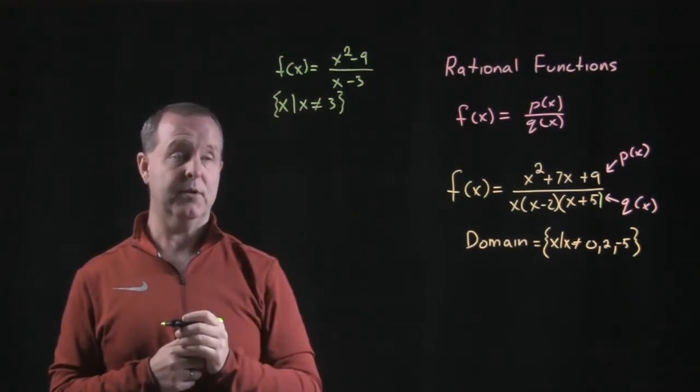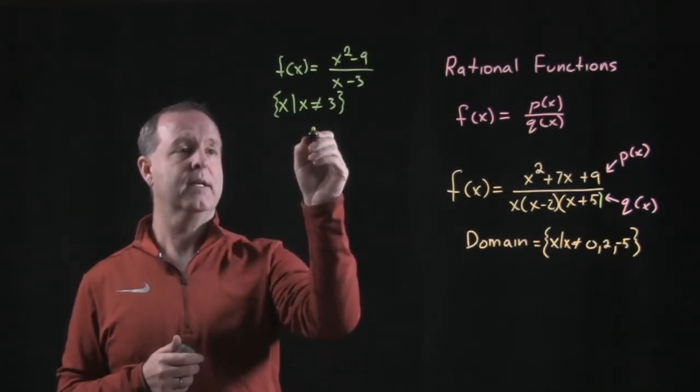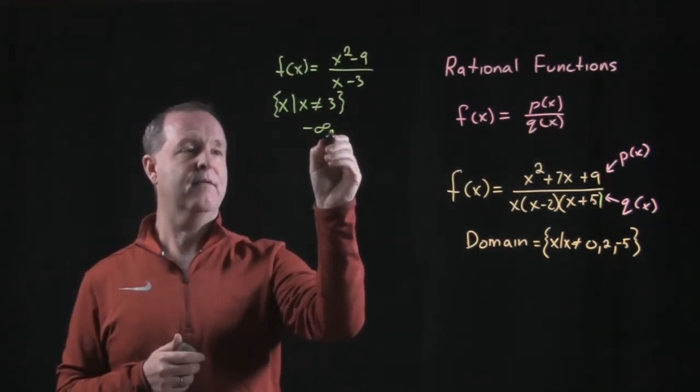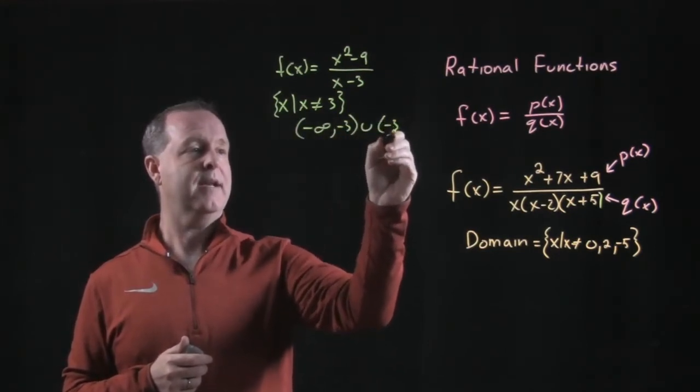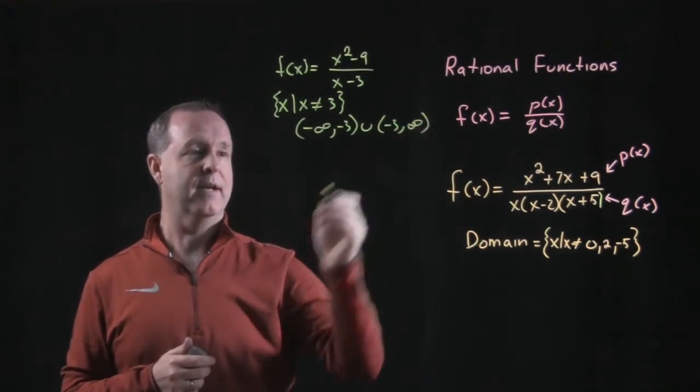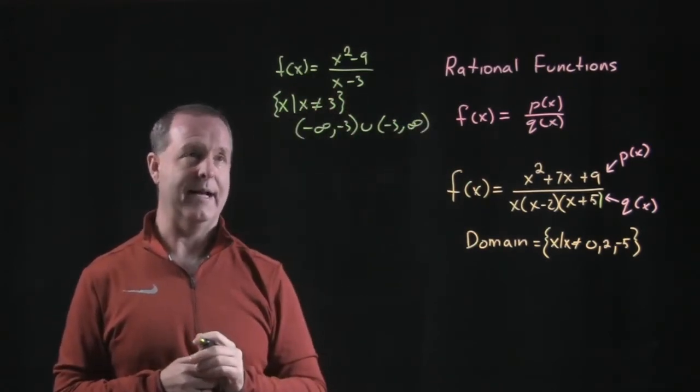I can put it in set builder notation or I also can put it in interval notation where I have the solutions of negative infinity to negative 3 with a union of negative 3 to positive infinity. And that's interval notation's way of describing that solution.